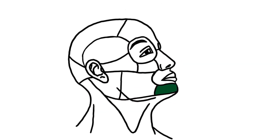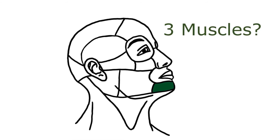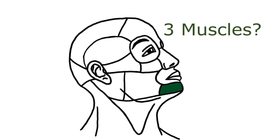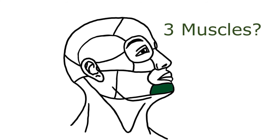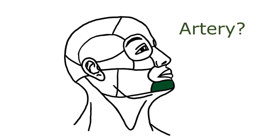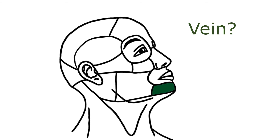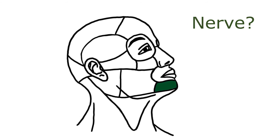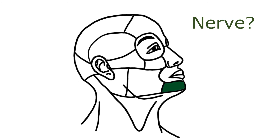Let's go through it once again. You've got three muscles: the depressor angulae oris, the depressor labii inferioris, and the mentalis. You've got the facial artery giving the mental artery, the facial vein, the mandibular nerve, the cervical branch, and the mental nerve.